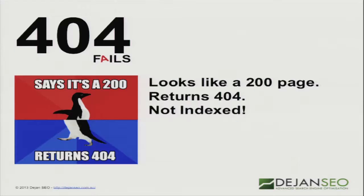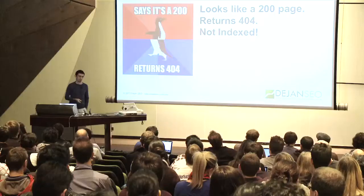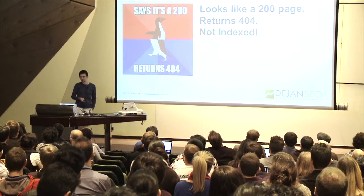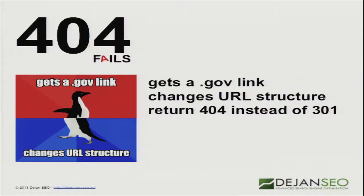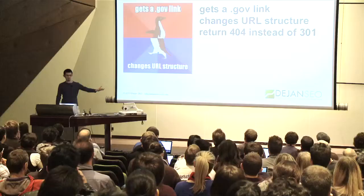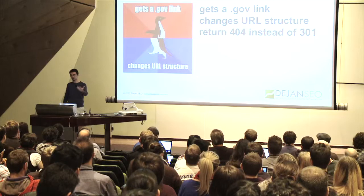In this case, the homepage of the site was returning 404 and Google wouldn't index it. And then this one — gets a government link, lots of good links to the page, changes URL structure, but doesn't do a 301 redirect. I see developers doing this all the time — they get a great website, it ranks really well, and then they change the framework from Drupal to WordPress, change the URL structure for whatever reason, and then don't 301 redirect. That's upsetting.